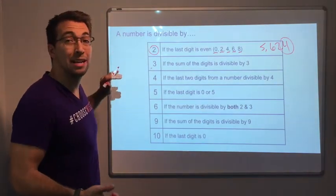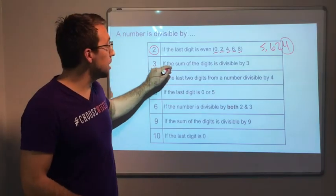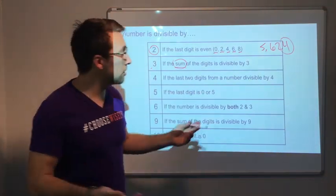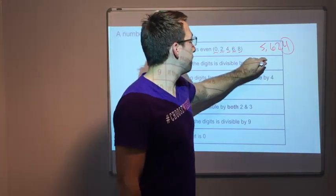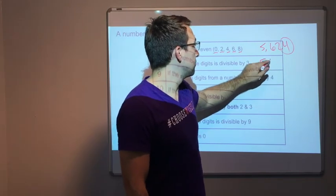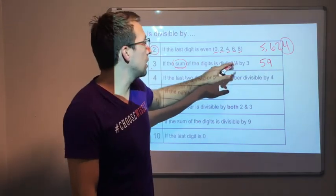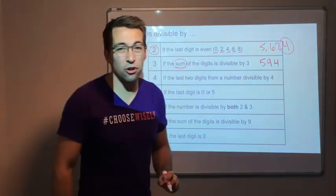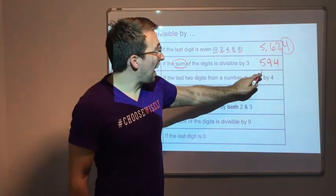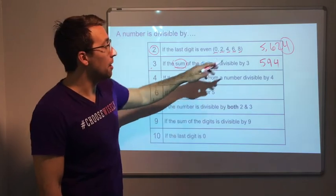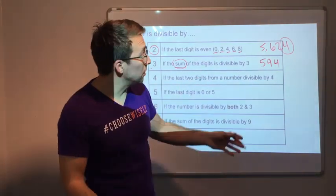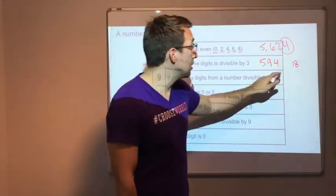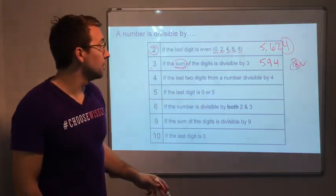3. A number is divisible by 3 if the sum, vocabulary term, the sum of the digits is divisible by 3. So let's look at this. 594. 5 plus 9, so the sum is an addition problem. 5 plus 9 is 14, plus 4 is 18. So 18 is divisible by 3. 3 times 6 is 18. So we're good. It's a green check.